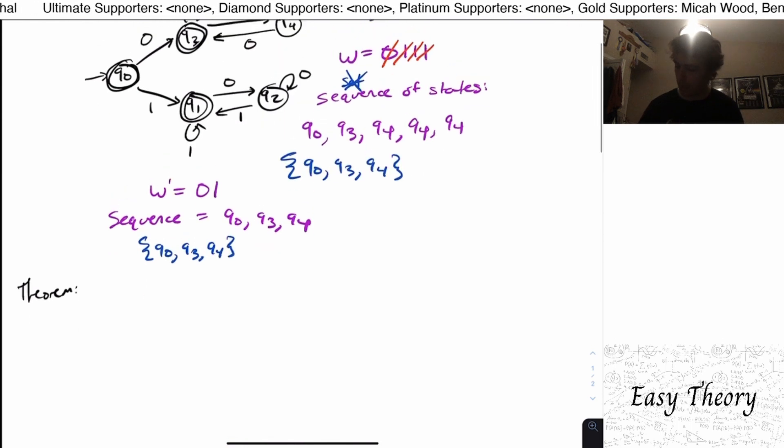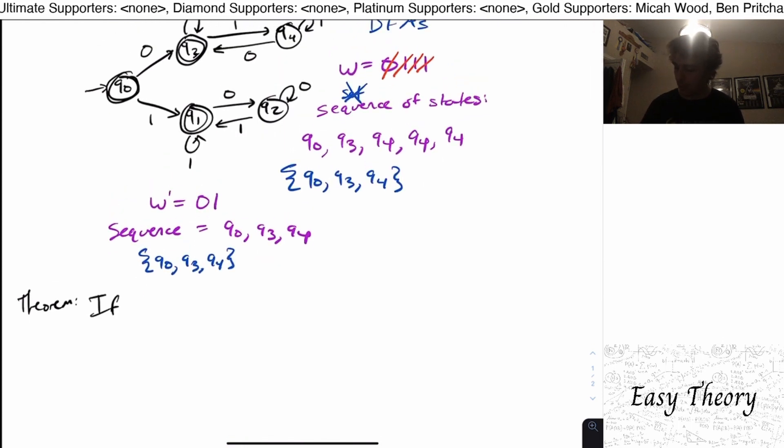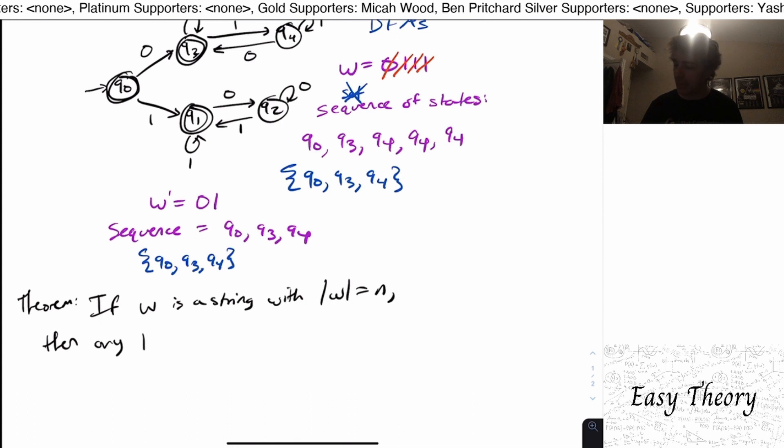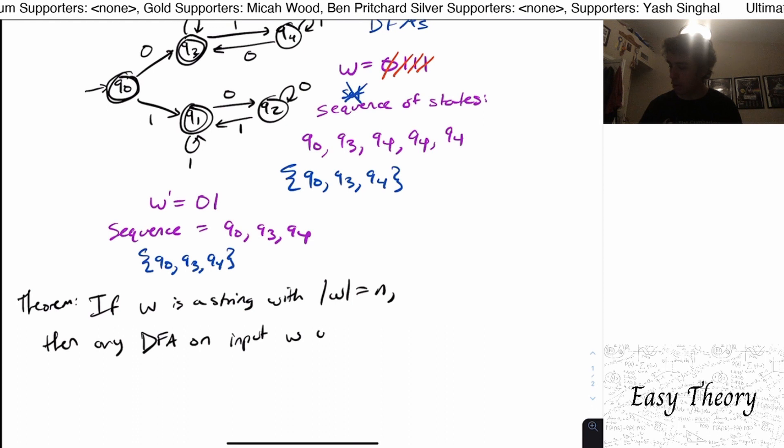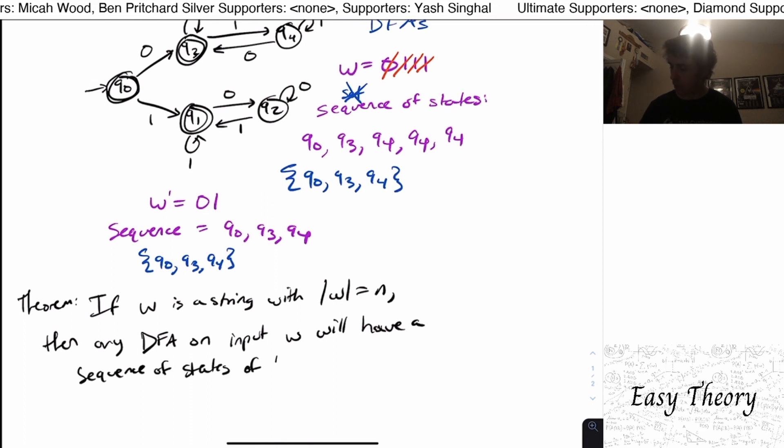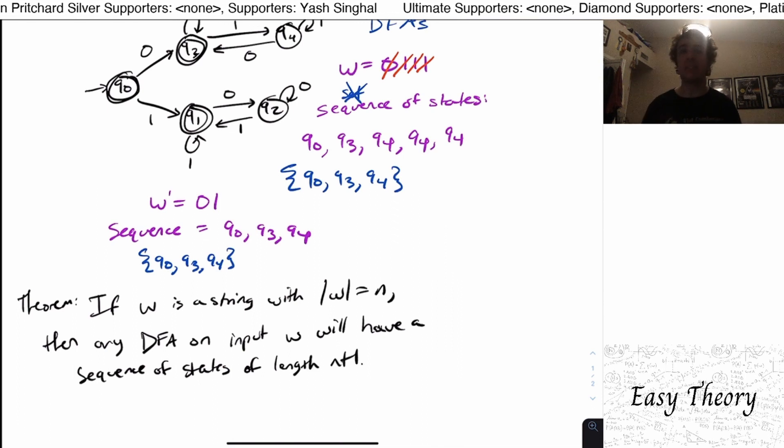So theorem, if we have a string, if w is a string, with the length of w equal to n, then any DFA on input w will have a sequence of states of length n plus one, always for a DFA.